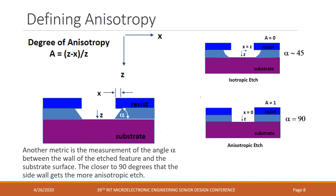Anisotropy relates the vertical and horizontal portions of an etch. In an isotropic etch, there is some horizontal and vertical etching causing the final critical dimension, or CD, of a feature to be smaller than what was printed in the litho step. A completely anisotropic etch has no horizontal component, resulting in a perfectly vertical etch. Degree of anisotropy takes a ratio between these two components to quantify how anisotropic a given etch is — the closer to one this ratio is, the better the anisotropy.